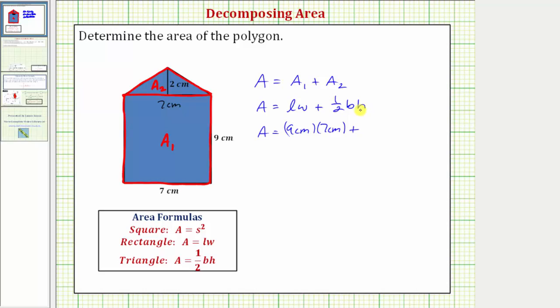And then plus the area of the triangle, which would be one-half times the base, which is seven centimeters, times the height, which is two centimeters.